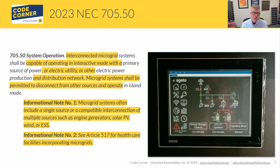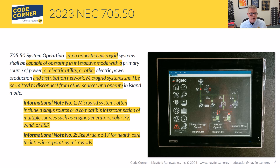Section 705.50 is where you'll find the start of talking about microgrid systems in relation to Article 705, which covers the interconnection of power production sources. There are some changes in the language from 2020. We have these interconnected microgrid systems — systems that are interconnecting with a utility, capable of operating in interactive mode with a primary source of power or electric utility. Microgrid systems shall be permitted to disconnect from other sources and operate in island mode.